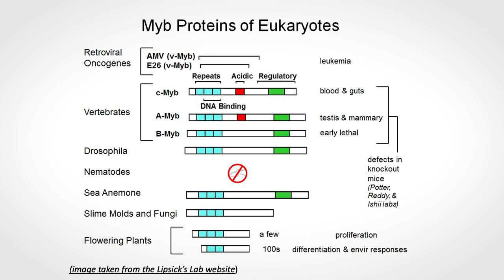MIB genes are also found in viruses, particularly retroviruses that infect birds, where they cause leukemia. Although no such viruses infect humans, these studies show that MIB has the potential to cause transformation and tumorigenesis, suggesting that MIB alterations in human cells could be a driver of cancer.